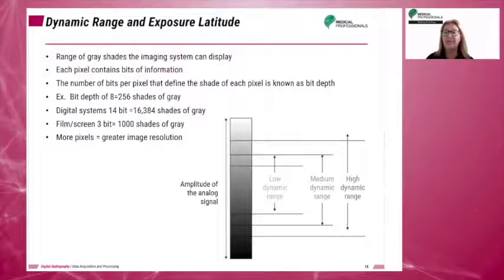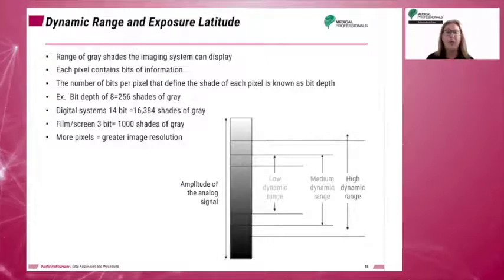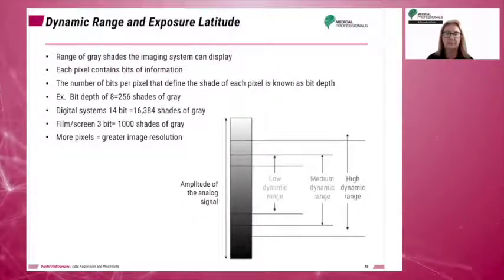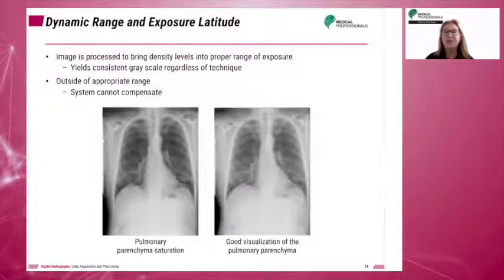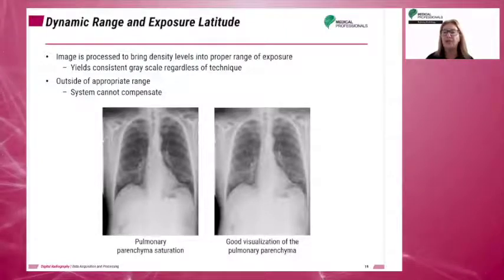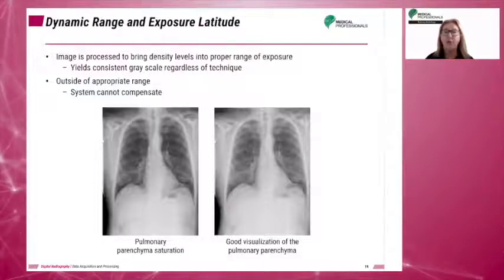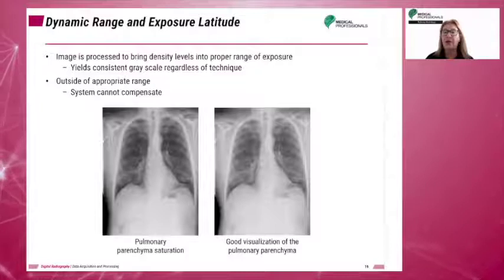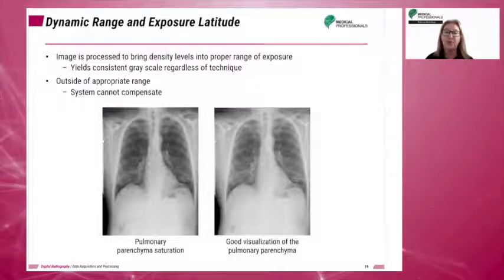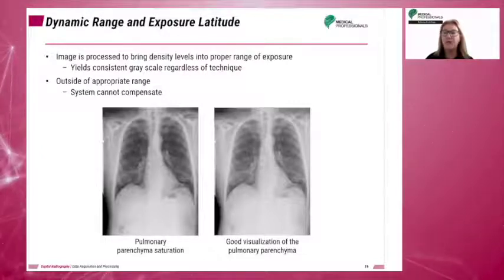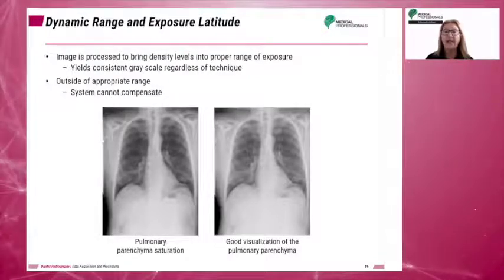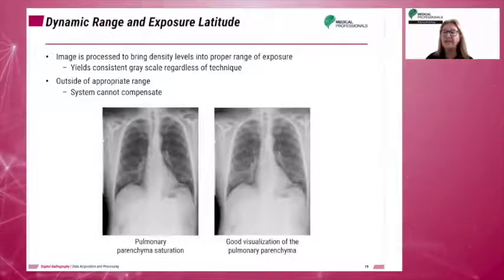Film screen is approximately a 3-bit system allowing for about 1,000 shades of gray. Digital imaging systems have wide dynamic range — the range of exposure values that an image receptor can respond to and use to acquire image data. A wide dynamic range also means that digital systems have greater exposure latitude. Due to their ability to display many shades of gray, the selection of exposure factors — MAS and KVP — is not as critical in digital imaging as in film screen imaging.